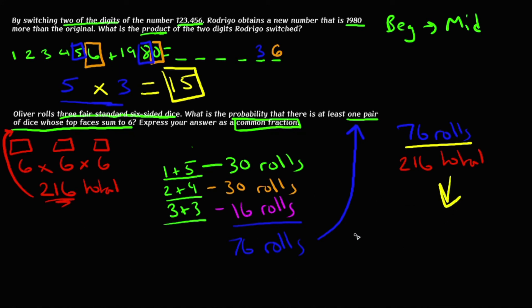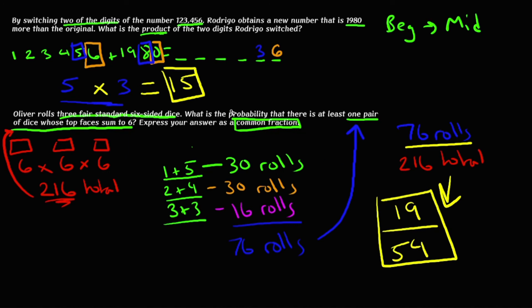Combining all three cases: 30 + 30 + 16 = 76 rolls satisfy our condition. Dividing 76 by 216 and simplifying gives a final answer of 19/54. That concludes our video on the MathCounts sprint round. A lot of these questions might seem complicated at first, but if you think about them from a different perspective you can often find quick and efficient methods. We got these from the MathCounts website — we'll link it in the description. They have a ton of extra practice materials. Next we'll be doing the target round.